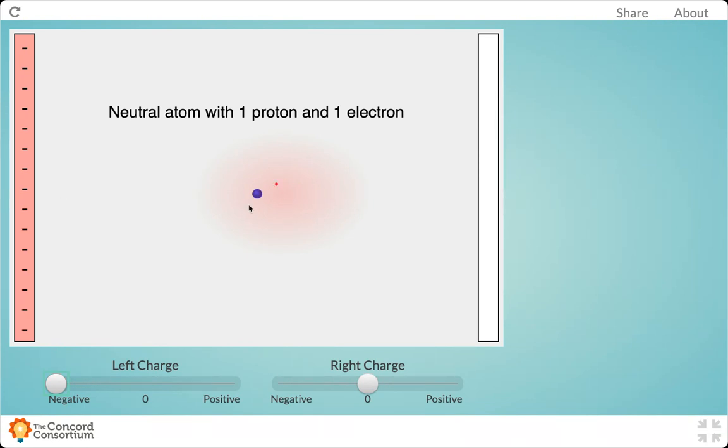Negatives and negatives are going to repel. If we bring it back to neutral, we return to our normal symmetrical electron cloud.